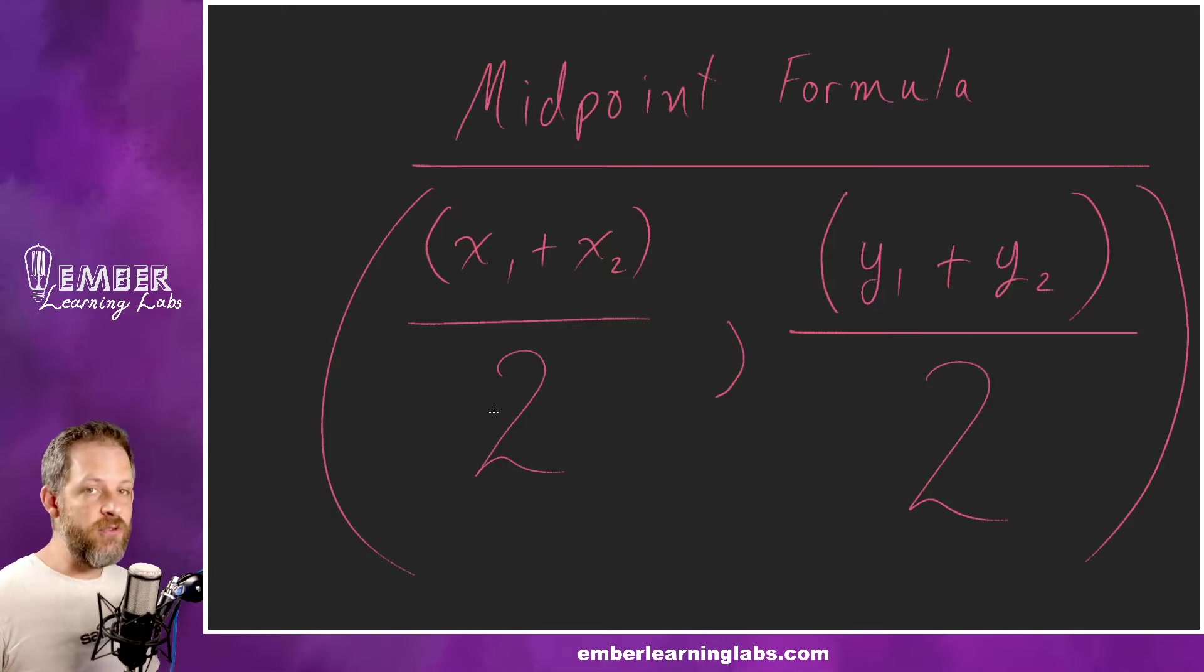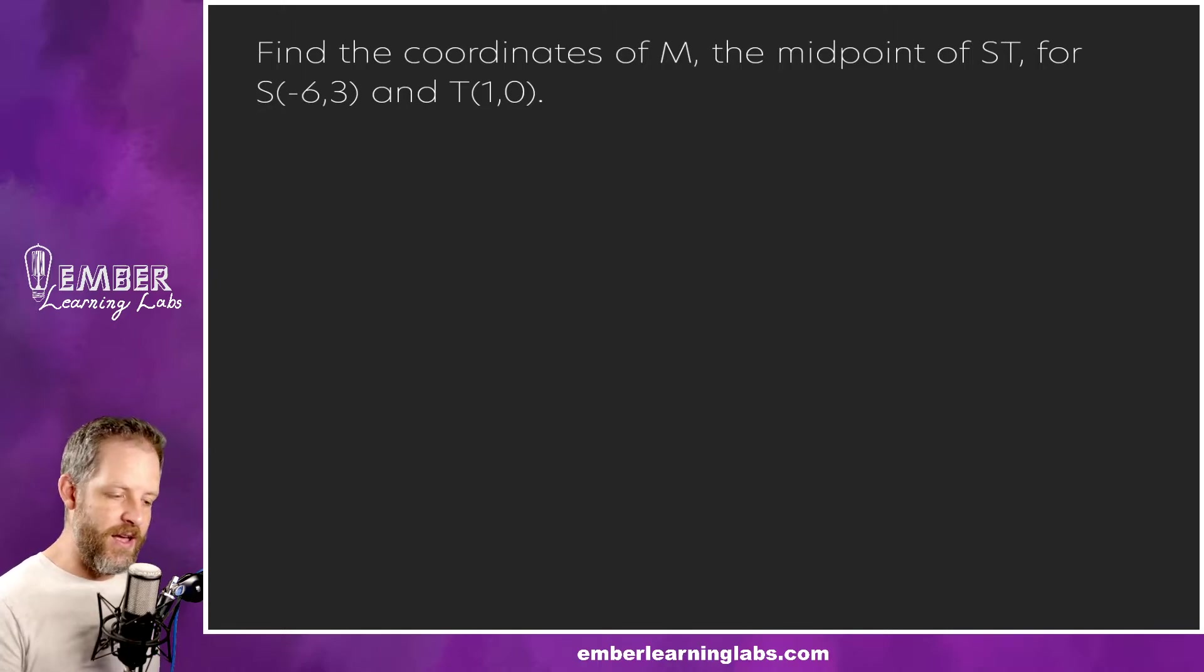That's super easy peasy lemon squeezy. Let's show how it works with an example. We're going to find the coordinates of M, the midpoint of segment ST for point S negative six, three and T one, zero.